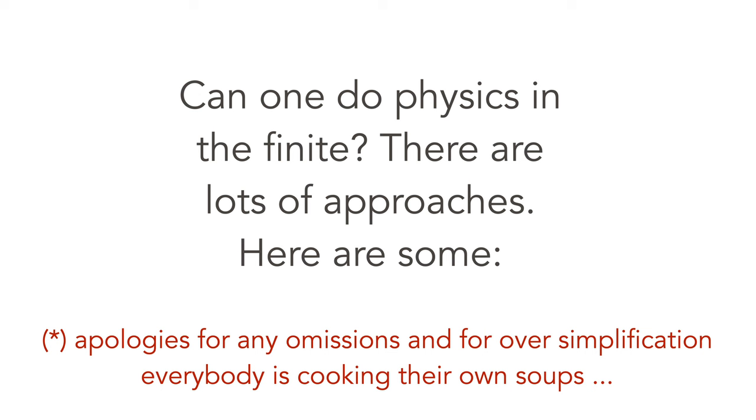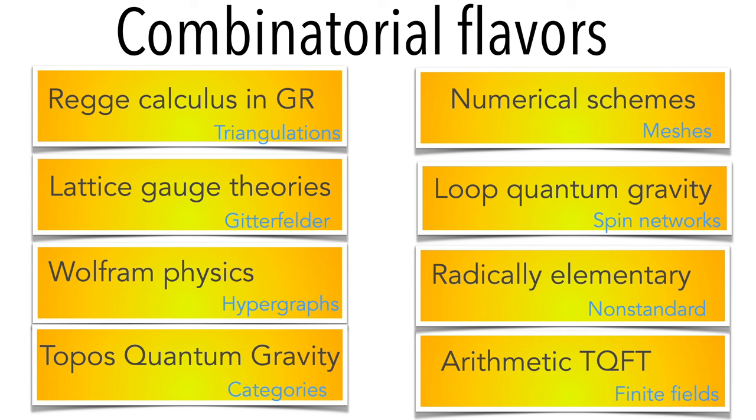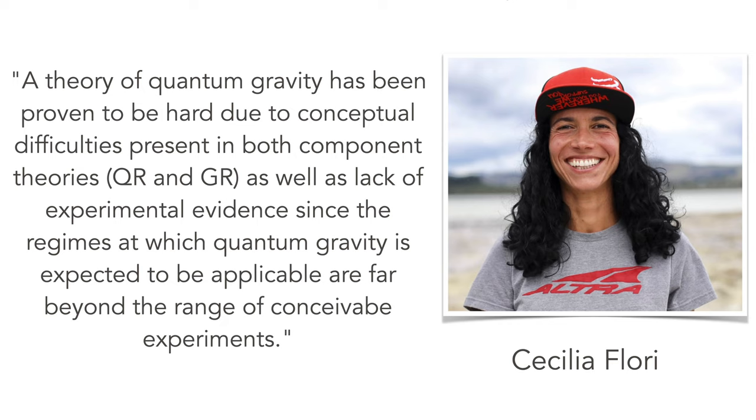There are lots of approaches, and I might miss some. Here are a couple of flavors. Some are numerical schemes like Regge calculus or lattice gauge theories. In physics, numerical schemes in general for PDEs or ordinary differential equations. Loop quantum gravity is an approach to combine quantum mechanics and gravity. Wolfram physics is based on finite hypergraphs. I mentioned the radically elementary approach of Nelson. There's topos quantum gravity which changes sets to more general objects like topoi and changes language, changes logic. And there's arithmetic topological quantum field theories over finite fields with more number theoretical schemes.